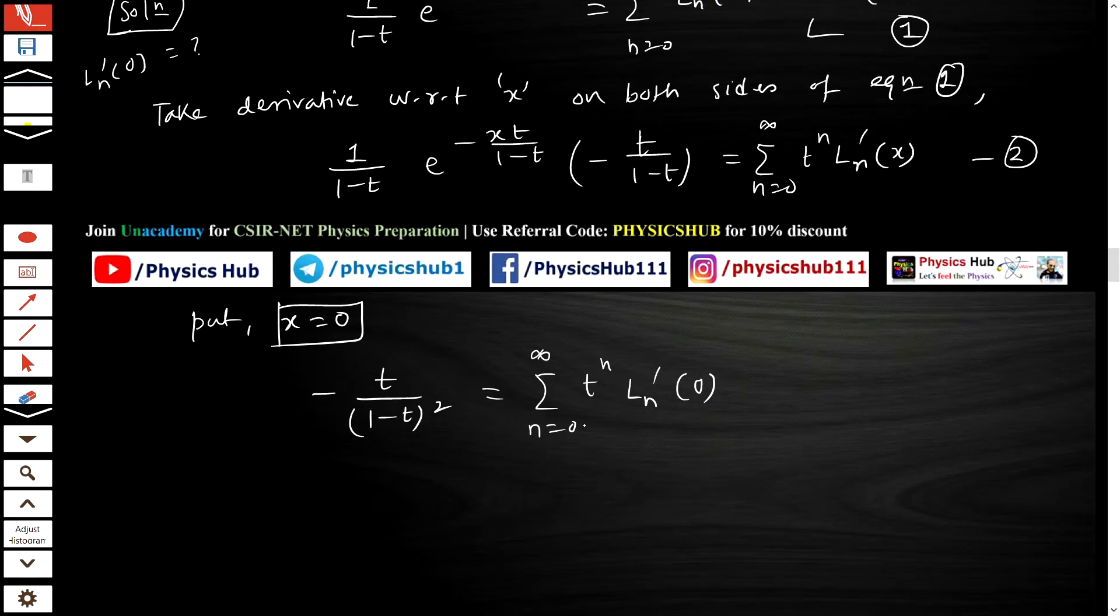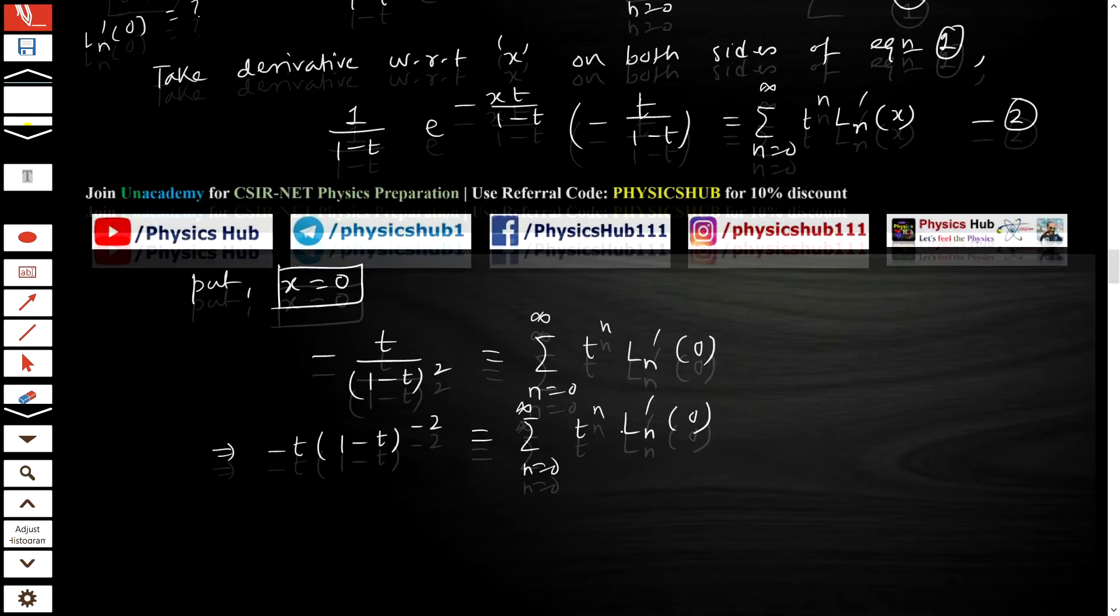We have put x equal to 0 in equation 2, and after doing this what you get: -t * (1-t)^(-2) equals the sum from n=0 to infinity of t^n * ln'(0). Simple.